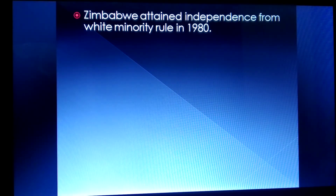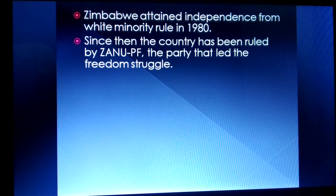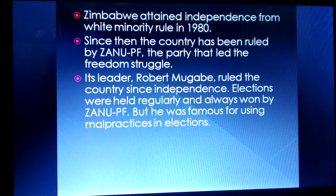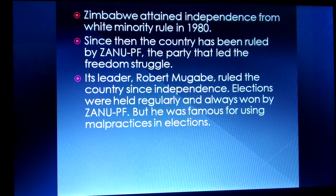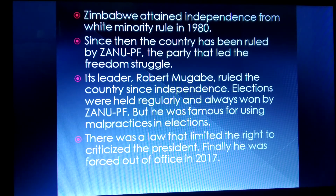Zimbabwe attained independence from white minority rule in 1980, and since then the country has been ruled by ZANU-PF, the party that led the freedom struggle. Its leader Robert Mugabe ruled the country since independence. Elections were held regularly and always won by ZANU-PF, but he was famous for using malpractices in elections. There was a law that limited the right to criticize the president. Finally, in 2017, he was forced out of office by the government.